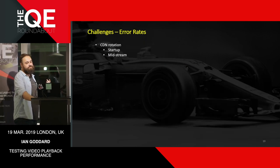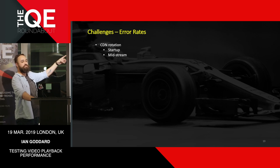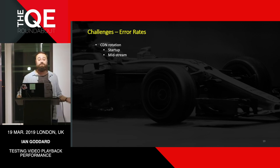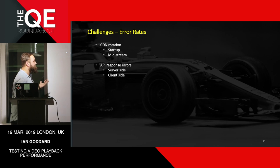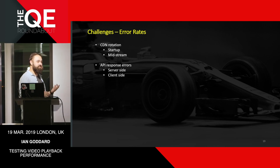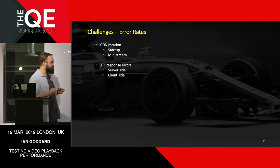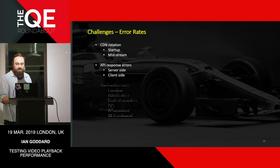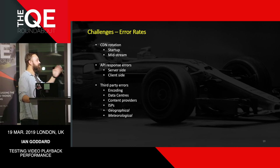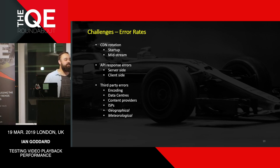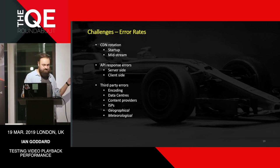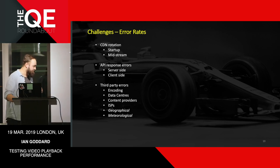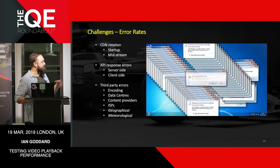Error rates — what are you interested in? What happens if your CDN rotates, or China's data center goes down — right at the beginning or midway through someone watching something? How do you handle that? Your API responses are also worth examining. It's amazing how many people want to blame the customer or the developer, but sometimes it's our side. Third-party errors from your encoding, data centers, content providers, ISPs, even geographical and meteorological events — it's very difficult to simulate a storm hitting your building, but these things happen.